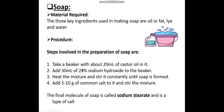Procedure for preparation of a soap bar: Ek beaker lena hai jisme 20 ml of castor oil — jo essential oil hai — pipette ke zariye measure karein. Phir 30 ml of 20% sodium hydroxide solution beaker mein add karein — yeh lab mein prepared form mein bhi milta hai. Phir mixture ko heat karein aur continuously stir karte rahein jab tak soap solid form mein na ban jaye.